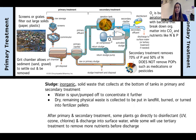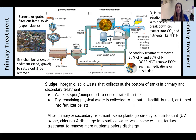In the aeration tank, an air compressor, fountain, or other method incorporates oxygen. The tank also contains activated sludge — solids containing bacteria — which break down organic matter into carbon dioxide and nutrients like nitrogen and phosphorus. Secondary treatment removes up to 70 percent of phosphorus and 50 percent of nitrogen, but does not remove persistent organic pollutants like medications or pesticides.